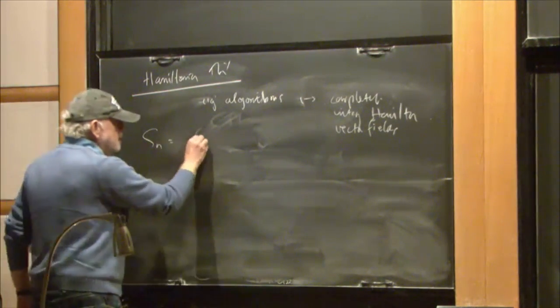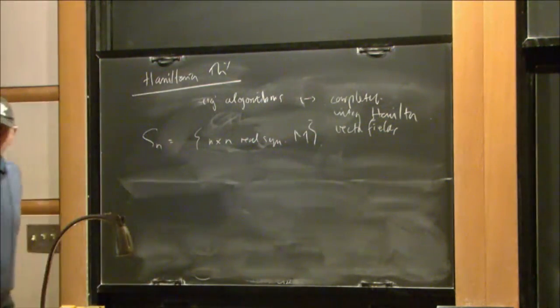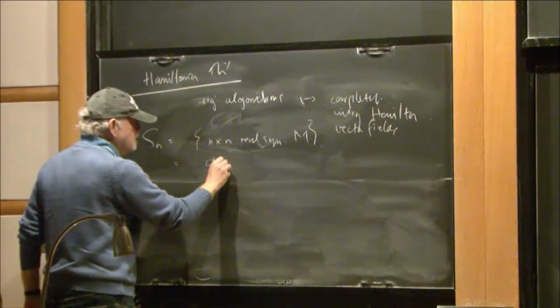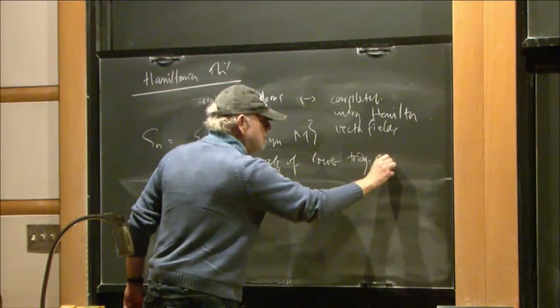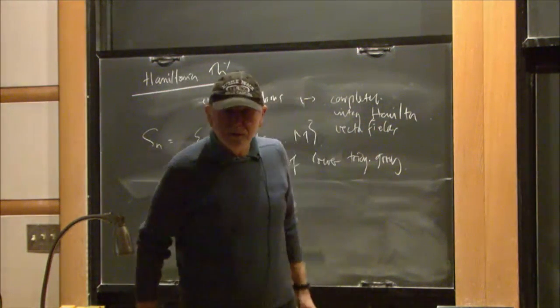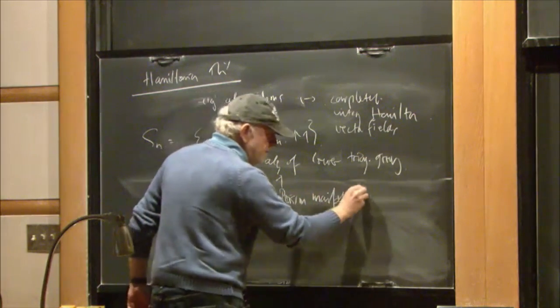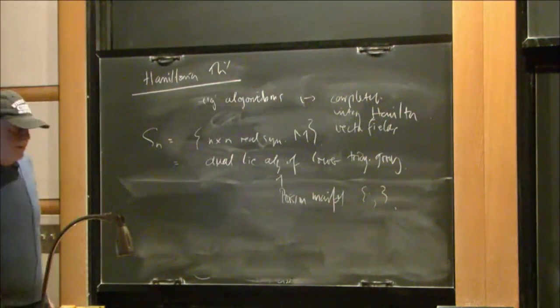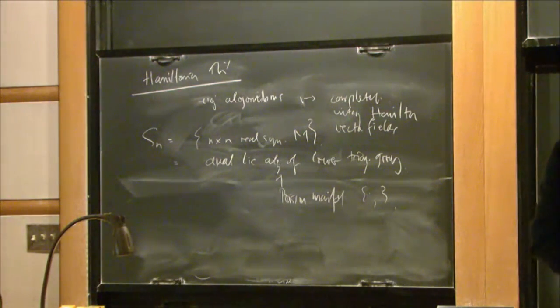So, I always regard it as really remarkable that this very practical algorithm which you do is, in fact, intimately related to completely integrable Hamiltonian systems. So, let SN be the set of n by n real symmetric matrices which we write in. Now, the key observation is that this is equal to the dual, the algebra, of the lower triangular group. And as such, any dual, the algebra carries a natural Poisson structure, the Li Poisson structure. So, this is a Poisson manifold. So, there's a Poisson bracket which satisfies the Jacobi identity. It's a degenerate Poisson structure and by general theory that means that the entire set of real symmetric matrices can be foliated by symplectic leaves.